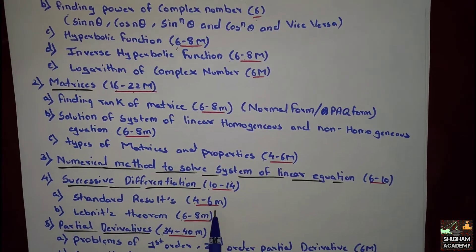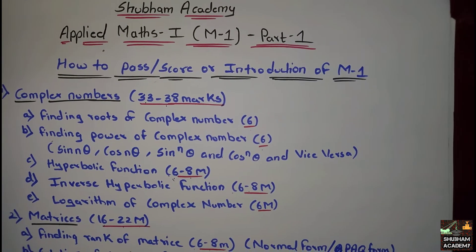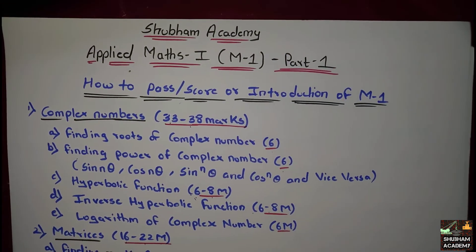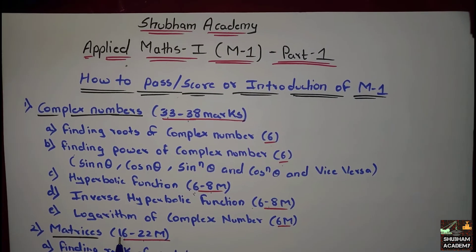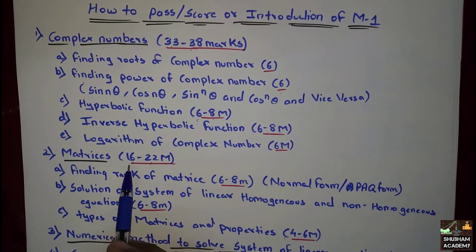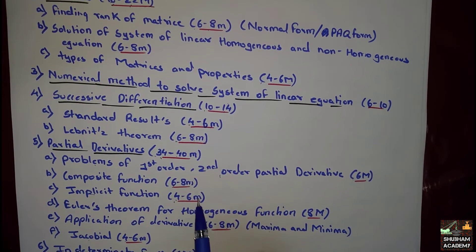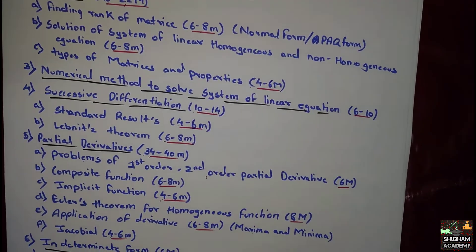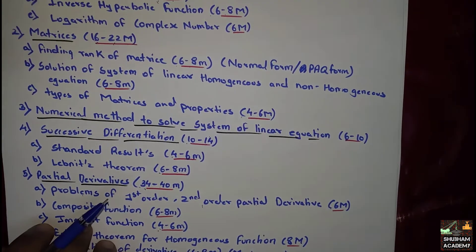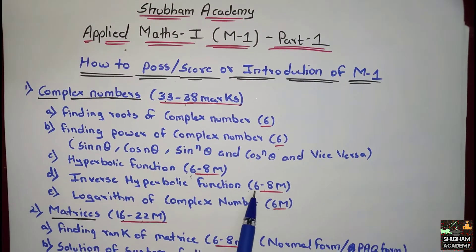These are all the topics and their marks. Now if you are studying M1, identify which modules are simple for you and which topics you are comfortable with. Aim to confirm a minimum of 16 marks. For partial derivatives, the minimum passing is 32. If you get 29, there is a 3-mark grace to reach 32. Plan so that for each 6 to 8 mark topic, you secure at least 6 marks.